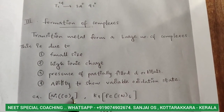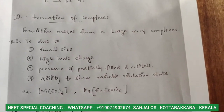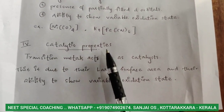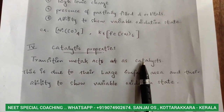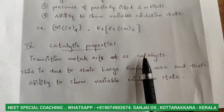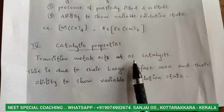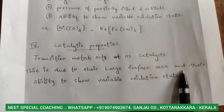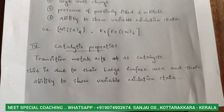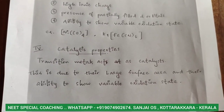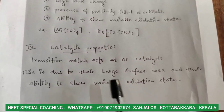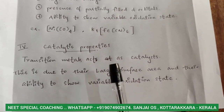For example, tetracarbonyl nickel Ni(CO)₄ and K₃[Fe(CN)₆] are coordination compounds. Next is the catalytic property — transition metals act as catalysts. For example, spongy iron is used as a catalyst in the Haber process for the preparation of ammonia. This is due to their large surface area and their ability to show variable oxidation state.